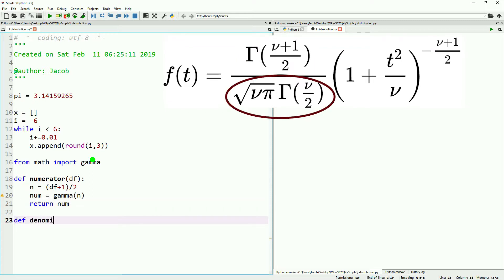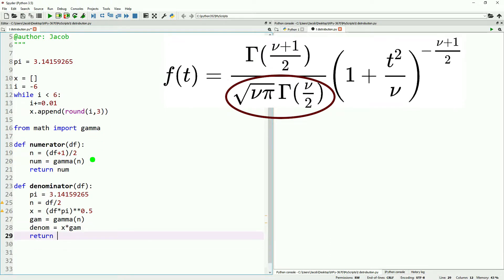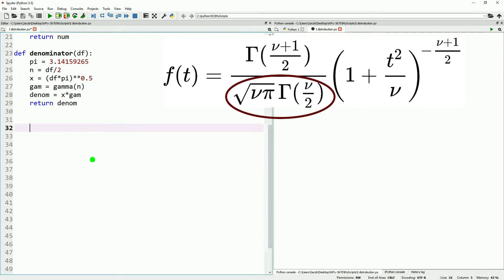Next, we'll define a function for our denominator. This is a bit more complex but still only needs degrees of freedom. We calculate what goes inside gamma (degrees of freedom divided by 2), define what gamma is multiplied by (square root of degrees of freedom times pi), get the gamma value, multiply them together, and return that number as our denominator.